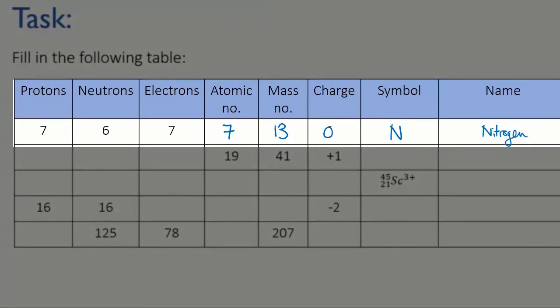To complete the symbol, we put the atomic number at the bottom left and the mass number at the top left, and because this is a neutral atom, we don't need to write a charge. There we go. I'll leave the rest for you to finish off.